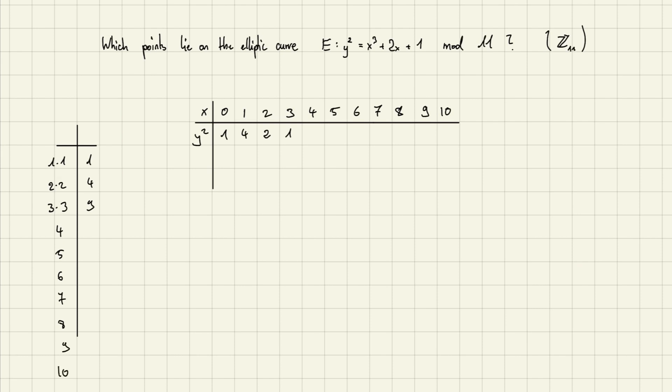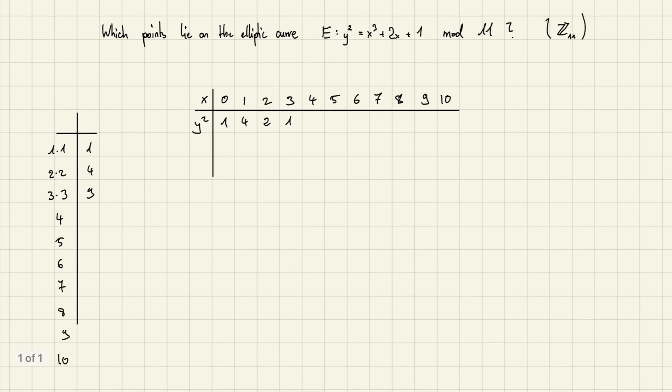We do that for all the numbers and eventually we get a list of values. For example, 4 times 4 is 16, so sometimes we get numbers larger than 11, so we have to take the mod again, which is 5 in this case. This one is 25, so the mod is 3.